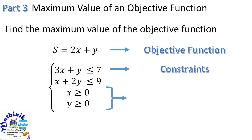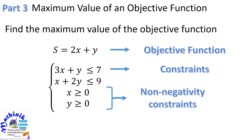You will notice in our system of linear inequalities, we have two more linear equations: x is greater than or equal to 0, and y is greater than or equal to 0. Since we're dealing with the objective function involving the variables x and y, these are the decision variables — the quantities that are to be solved or reduced in our problem. And since we're dealing with real-life objects, we will get only positive values for our decision variables, so these two inequalities are what we call the non-negativity constraints.